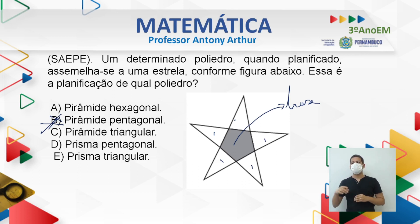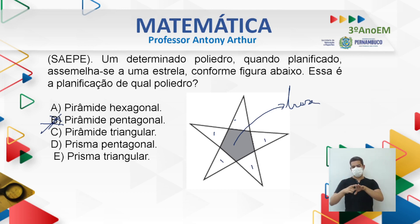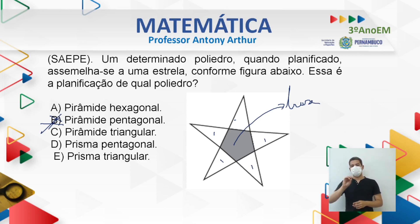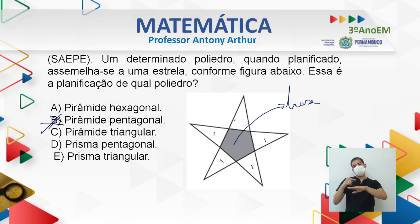Uma pirâmide vai ter um polígono na base e triângulos ao redor dela. A lateral de toda pirâmide é formada por triângulos. O que muda é apenas a base: pode ter um hexágono, um pentágono, um quadrado, o que você quiser colocar na base da sua pirâmide.